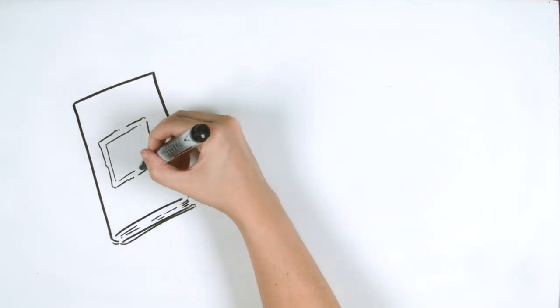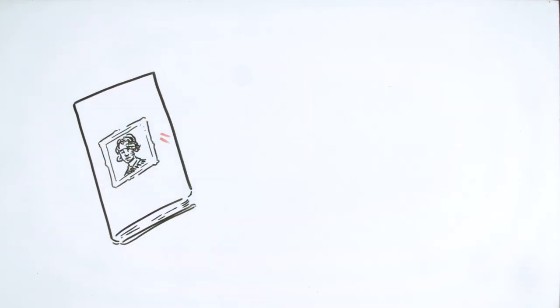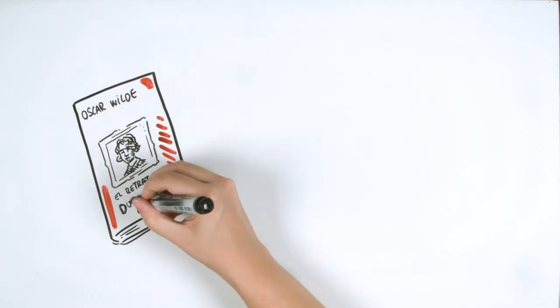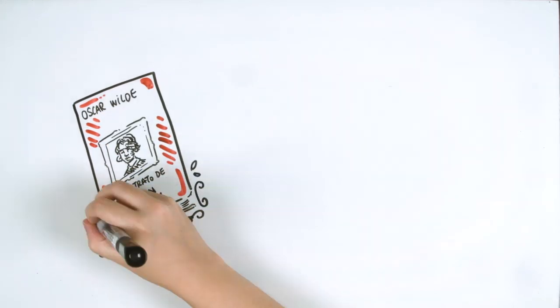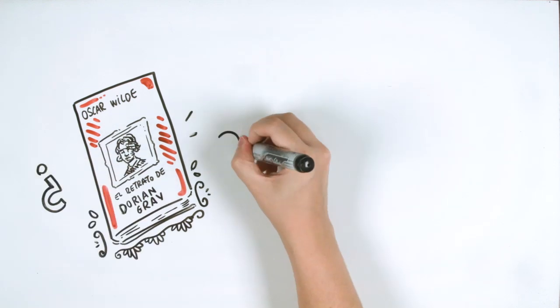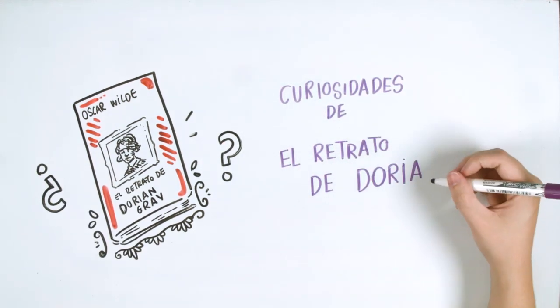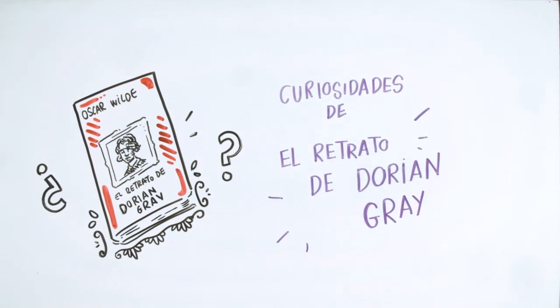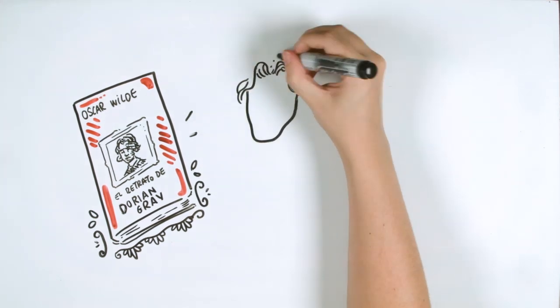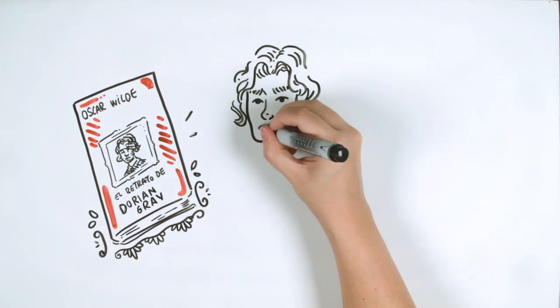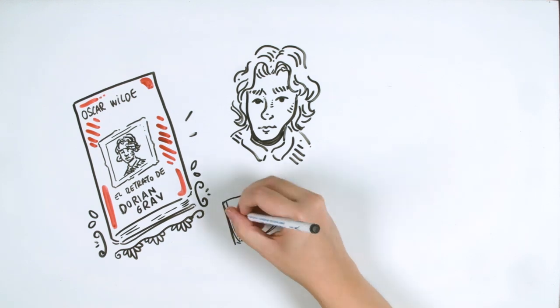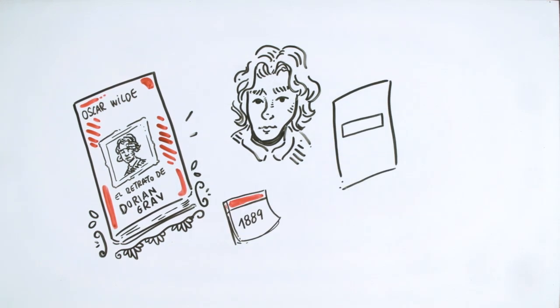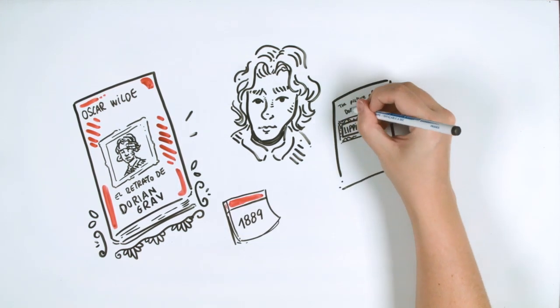Both its theme and its aesthetics have contributed to turning the portrait of Dorian Gray into a classic. There is also a certain mystery surrounding this work that makes it even more special. This is why we are going to tell you about some of its curiosities. First of all, you should know that the portrait of Dorian Gray is Oscar Wilde's only novel. He submitted it as a story to Lippincott's monthly magazine in 1889, and it was published on the 20th of June, 1890.